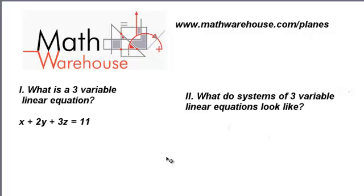In this video, we're going to look at two things. One, what is a three-variable linear equation? If I give you something like x plus 2y plus 3z equals 11, what the heck does that represent? What does it look like? What does it look like on a graph?